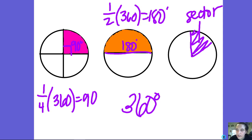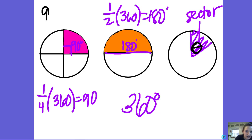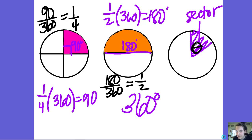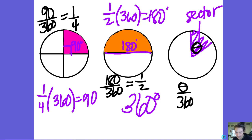Whatever angle this sector has, you put that angle over 360. For example, if the angle is 90, then 90 over 360 is one-fourth, so that tells you it's a fourth of the circle. 180 over 360 gives you one-half. So whatever your angle is — it can be one degree or 200 degrees — you put it over 360 and that tells you what fraction of the circle the sector is covering.